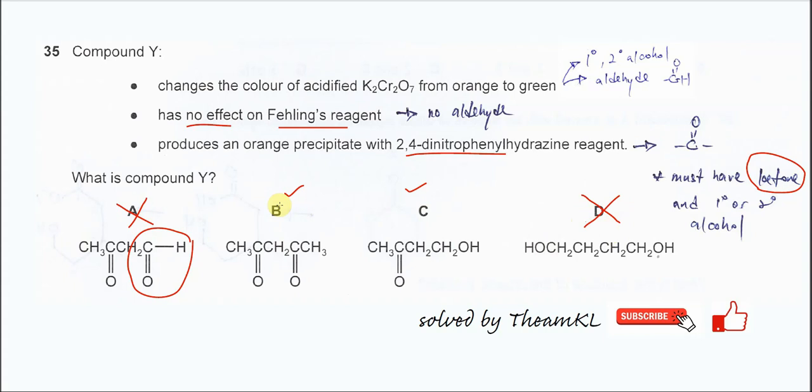For B, this one only shows carbonyl, the ketone. There are two ketone groups here. Ketone cannot be oxidized, means it will not change the potassium dichromate color. So B cannot be the answer.